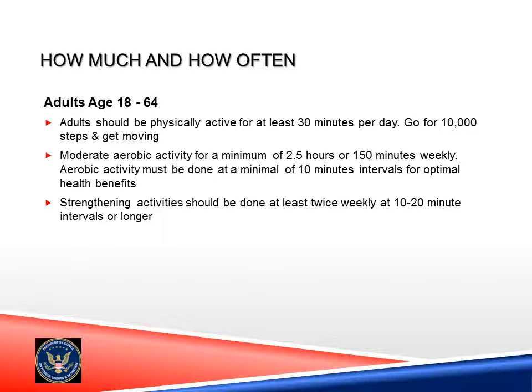Adults age 18 to 64 should be physically active for at least 30 minutes per day — go for 10,000 steps and get moving. Moderate aerobic activity for a minimum of 2.5 hours or 150 minutes weekly. Aerobic activity must be done at a minimum of 10-minute intervals for optimal health benefits. Strengthening activity should be done at least twice weekly at 10 to 20 minute intervals or longer. If all of this seems like a lot to track, make it easy and buy some pedometers — they're very motivational, fun, and helpful.